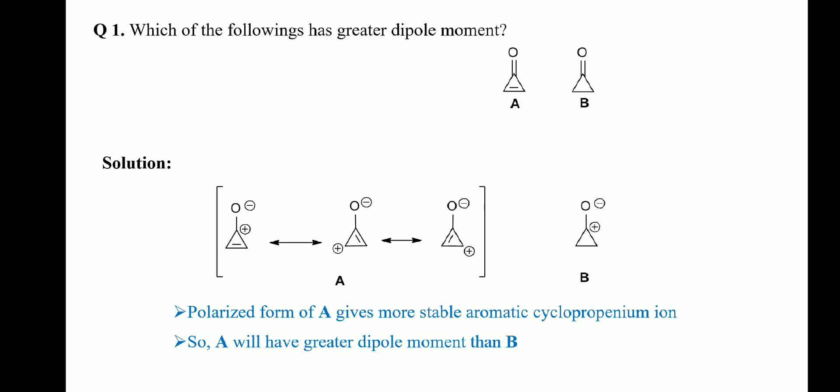Question 1: which of the following molecules has greater dipole moment? The dipole moment results from the polarity of the carbonyl bond. The completely polarized form of A is more stable than the completely polarized form of B, because in this form the cyclopropenium cation is aromatic. Therefore A has a greater concentration of negative charge on its oxygen, giving A a greater dipole moment.